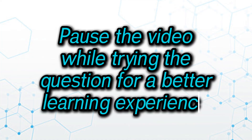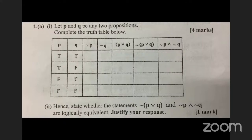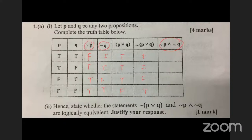Let's verify a logical equivalence from a past exam. Set up columns for NOT p, then p ∨ q, then NOT(p ∨ q). Then find p ∧ q using conjunction. Comparing the final two columns — NOT(p ∨ q) gives false, false, false, true and (NOT p) ∧ (NOT q) also gives false, false, false, true. The columns are identical, therefore the two statements are logically equivalent.